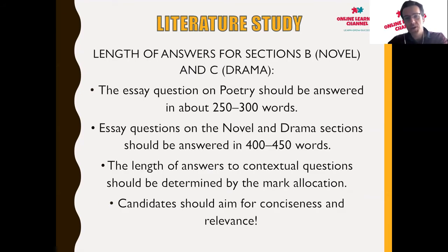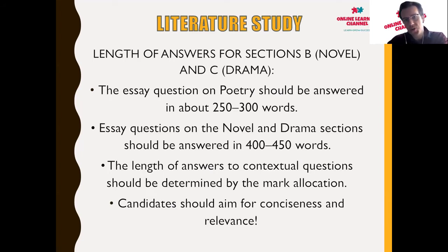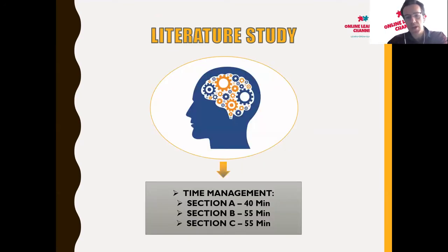Essay questions in Sections B and C should typically be between 400 to 450 words — roughly two to two and a half pages. Aim for your essay to be concise, relevant, and focused on answering the questions as specifically and coherently as possible. For time management, I would suggest dedicating about 55 minutes to Section B to give yourself enough time to cover the entire paper.